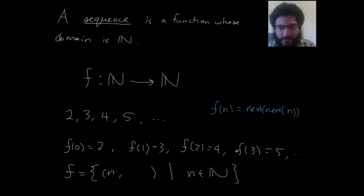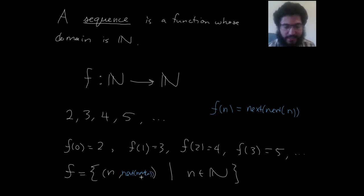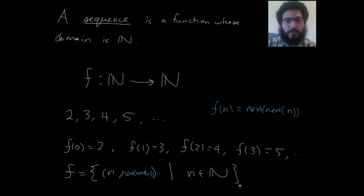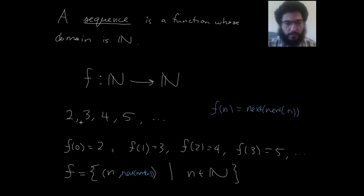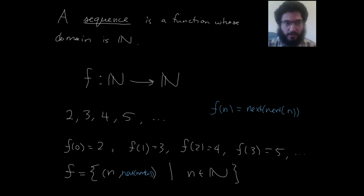So it's clear that the dot-dot-dot here is meant to communicate this intention: that F is the set of pairs (n, S(S(n))) running over all natural numbers n. Now we can write things with dot-dot-dots and understand that that's communicating an intention about a general formula — but that doesn't always work.